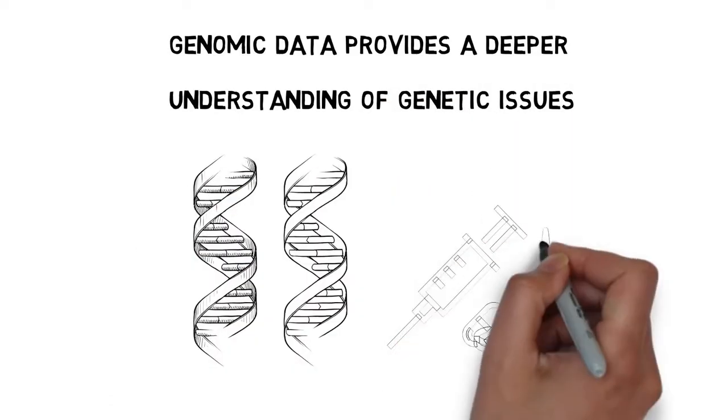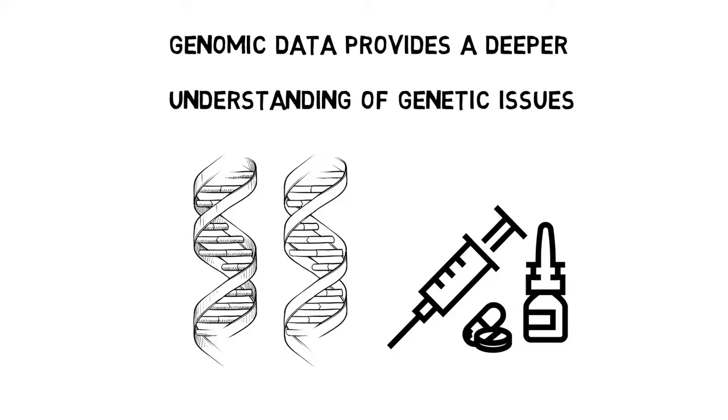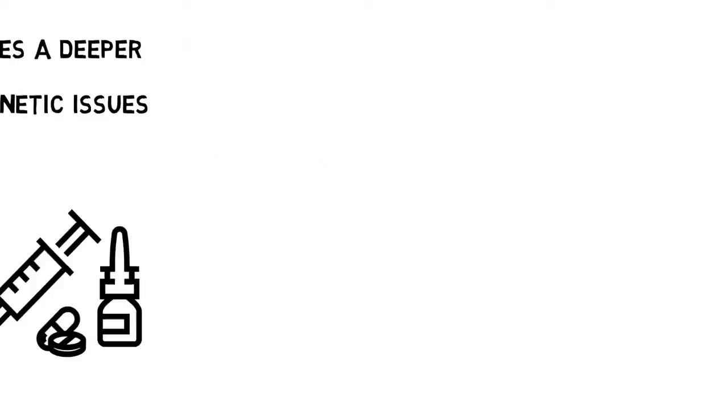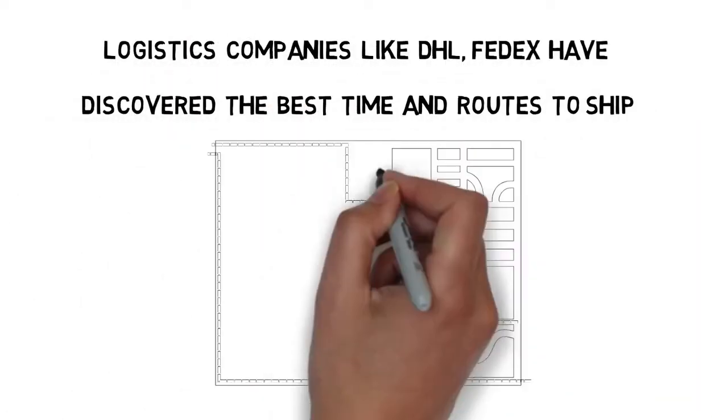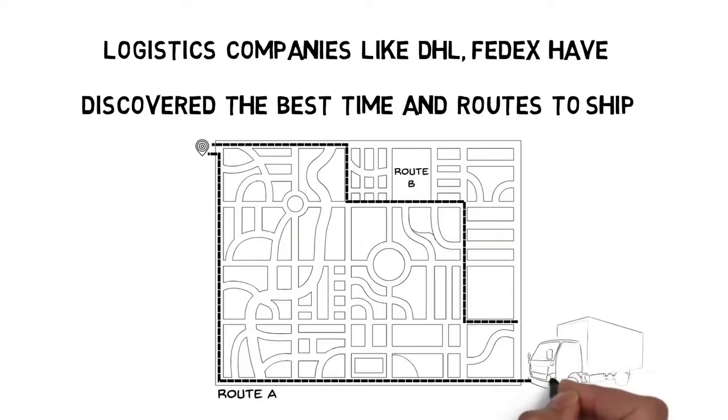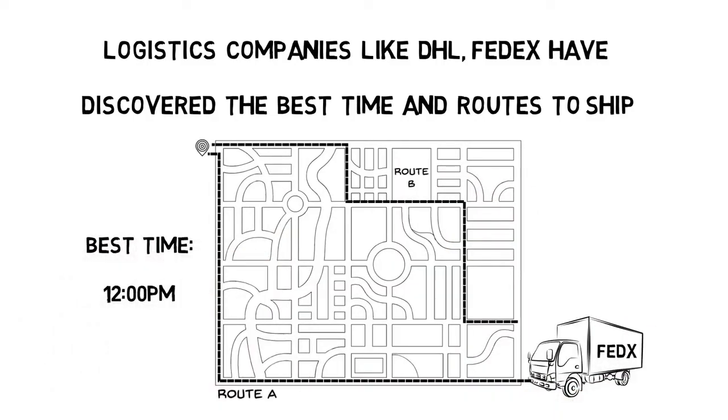Data science techniques, along with genomic data, provide a deeper understanding of genetic issues and reactions to particular drugs and diseases. Logistic companies like DHL and FedEx have discovered the best routes to ship, the best suited time to deliver, the best mode of transport to choose, thus leading to cost efficiency.